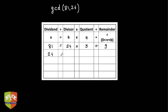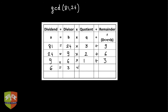The next step: the previous b becomes the new a, so 24 comes here, and the previous R of 9 comes to b's position. Now 9×2 is 18 and 18 plus 6 is 24, so the remainder is 6. We don't get 0, so repeat: 9 comes to a's position and 6 comes to b's position. 6×1 is 6, plus 3 is the remainder — still not 0, so repeat again. Now 6 is here and 3 goes to b's position, 3×2 is 6 and we get 0.